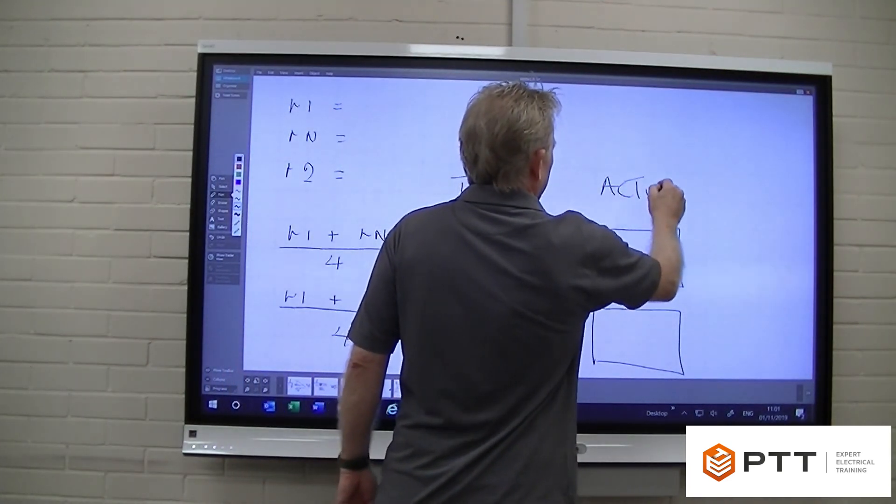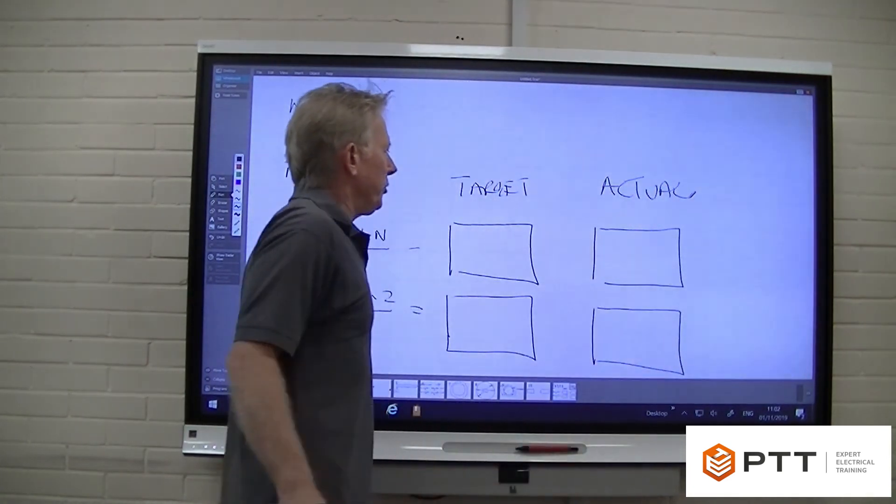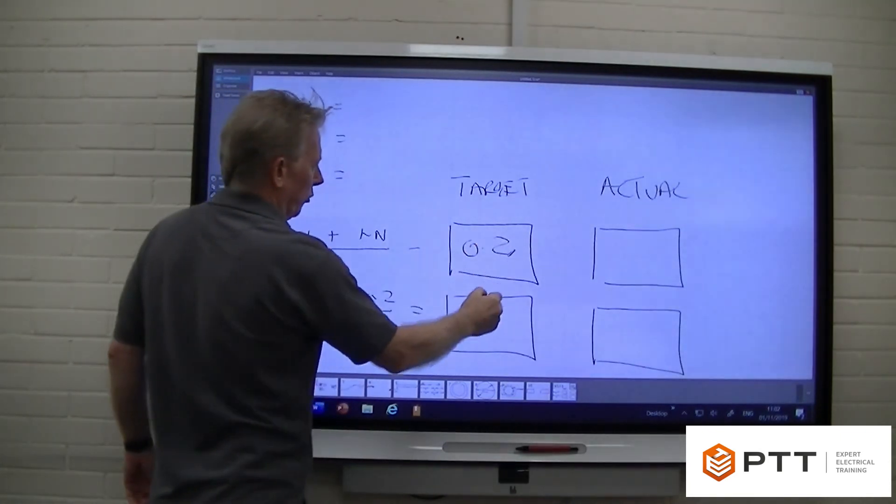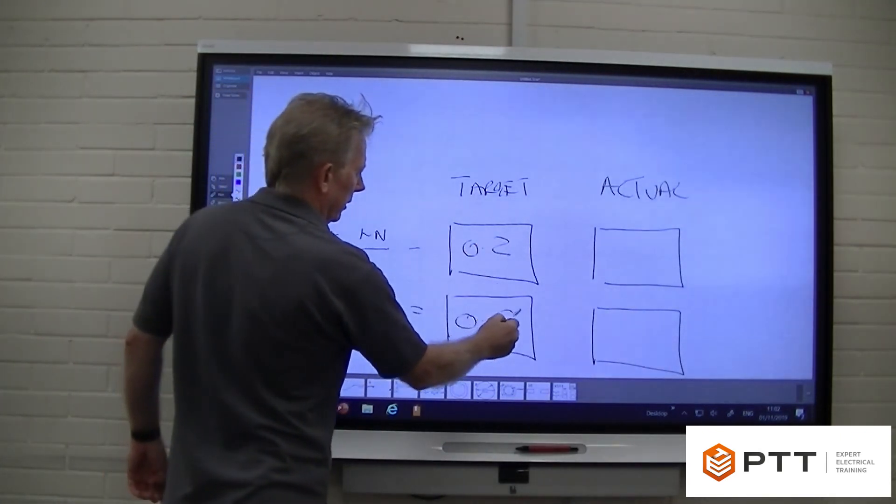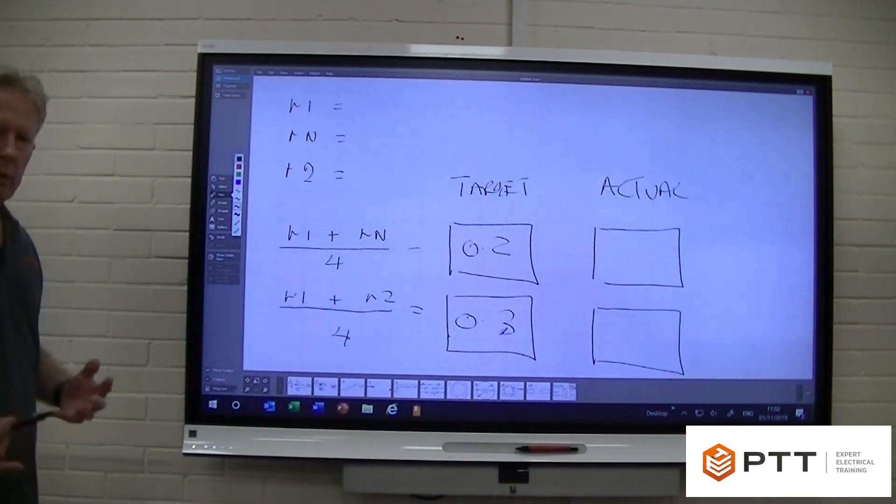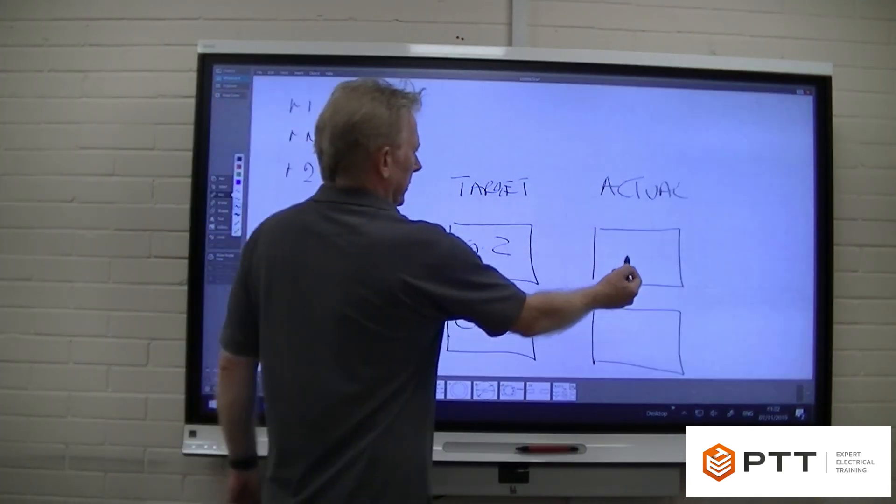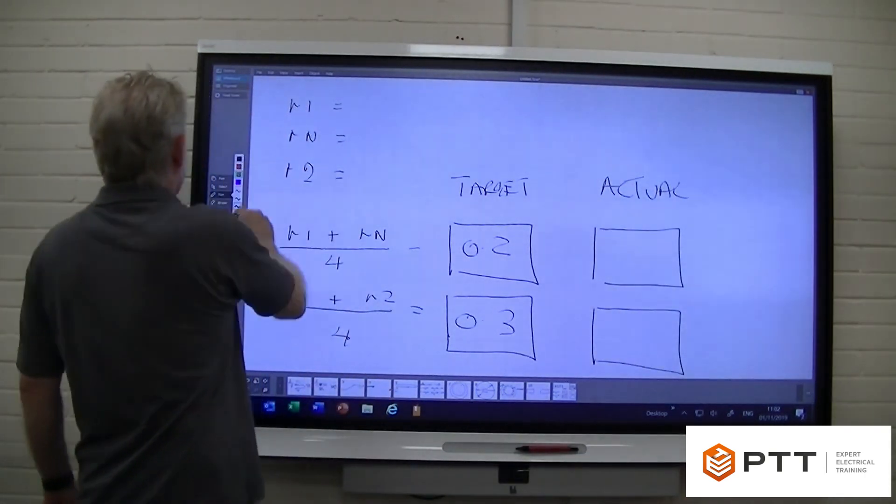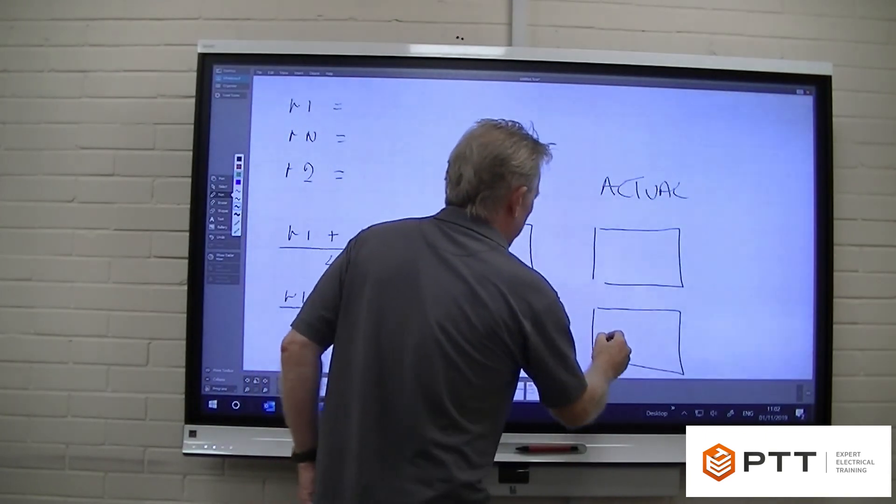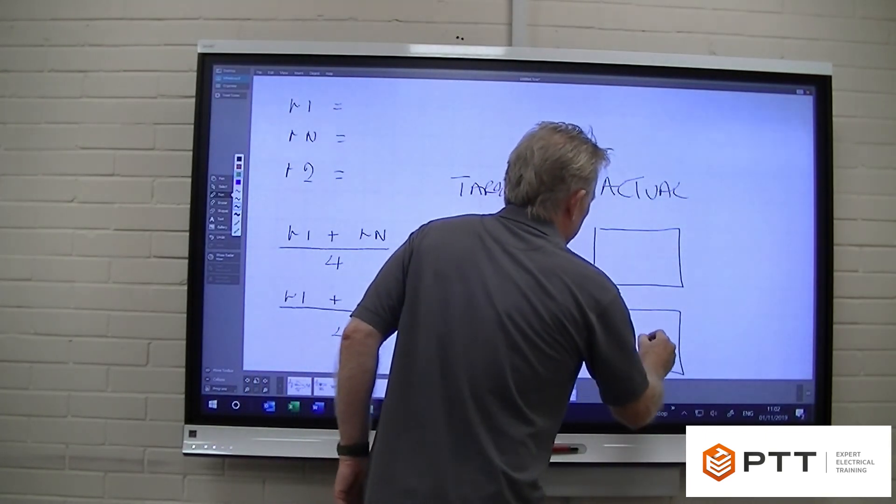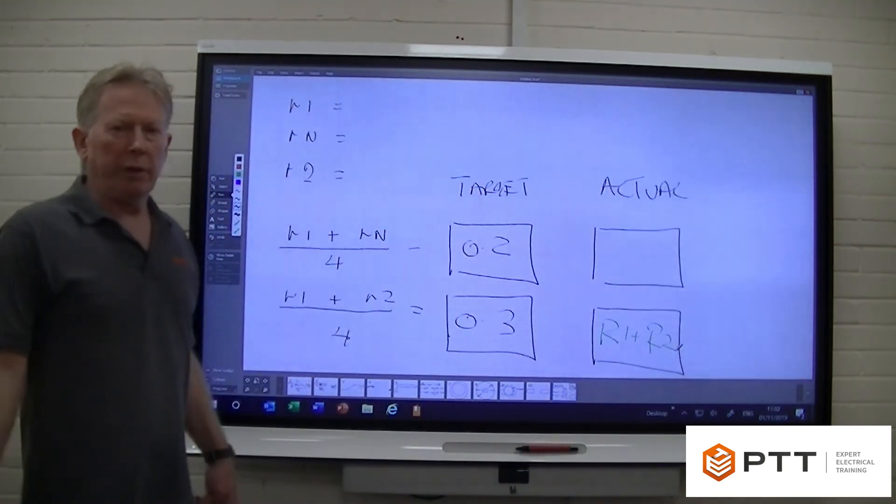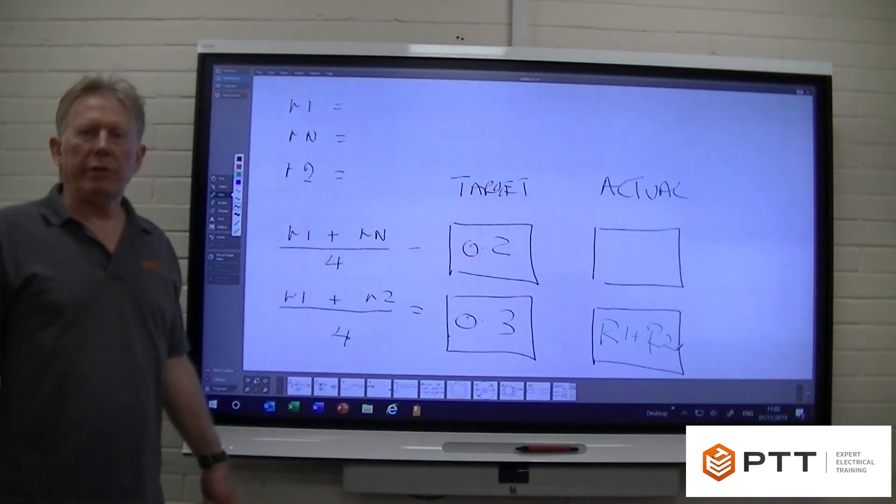So what we have here is the actual measurements. So we put our target figures in here, which were 0.2 and 0.3. We do our cross connections, and then we record our results. It's the result of this one here that actually becomes the r1 and r2 for the ring circuit.